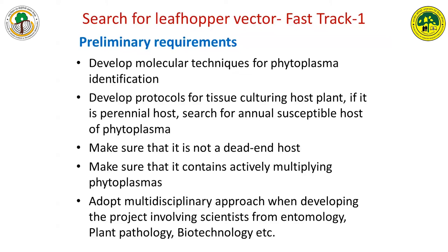Millions of rupees have been spent on this, and we still don't know what the vector is. Vectors have been named, but we are not sure whether they truly are the vectors — not only in sandal spike, but the same problem exists with coconut root wilt in Kerala and Areca yellow leaf in Kerala and Karnataka. But the silver lining is we now have very powerful molecular tools in our hands. Make the best use of them. That is the message I wanted to convey.